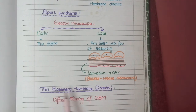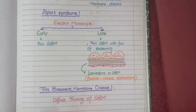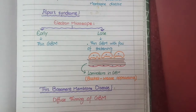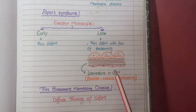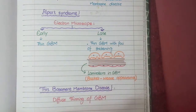In the second category, thin basement membrane disease, the pathology is that there is diffuse and uniform thinning of the glomerular basement membrane in all cases — that is why it is known as thin basement membrane disease. Unlike Alport syndrome, in this disease there will be no laminations or basket weave appearance of the glomerular basement membrane.